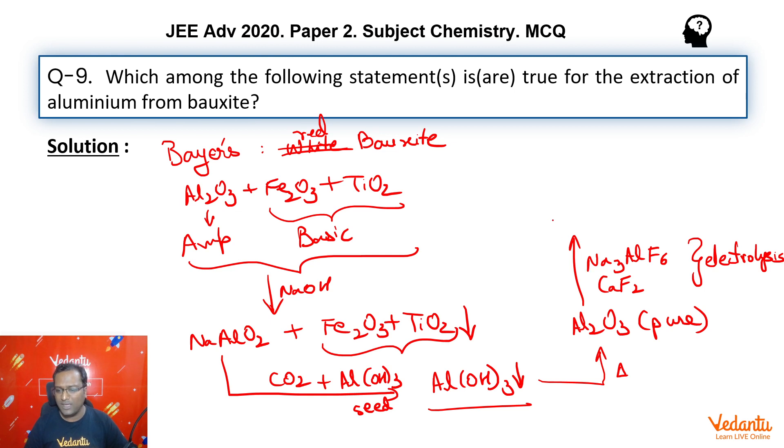Now when these reactions occur, at the cathode we have Al3+ getting reduced into aluminum. And at the anode, what actually happens?